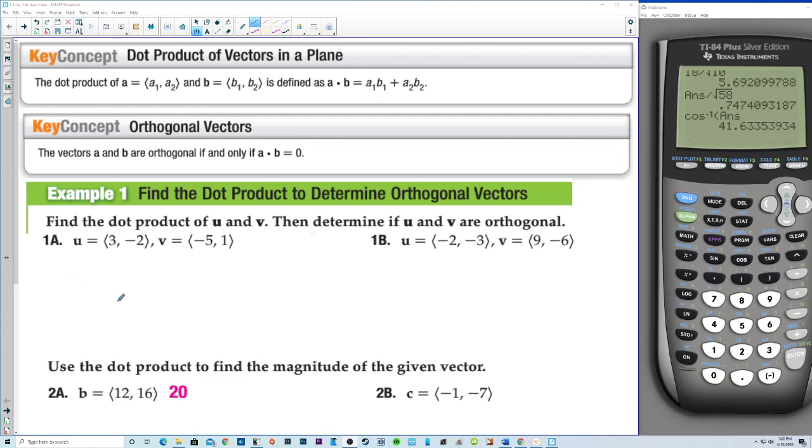Here we have section 8-3, day 2, and this is the in-class notes. We start out with the dot product, which would be a1 times b1 plus a2 times b2, always plus in the middle.